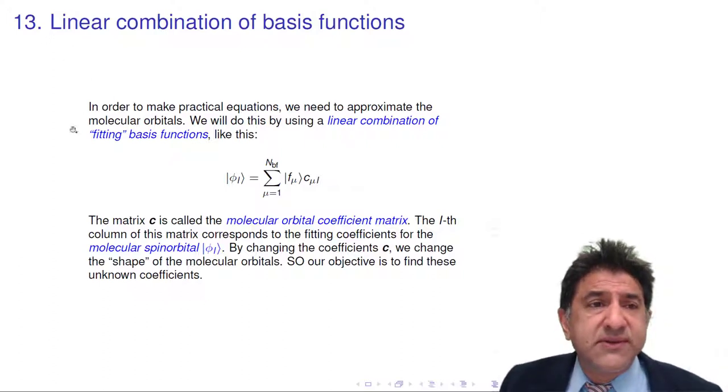We're going to use a linear combination of basis functions. So here's one of the orbitals in our product wave function, phi i. And we're going to approximate this as a linear combination of fitting basis functions. So the fitting basis functions are functions f of mu.